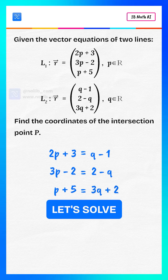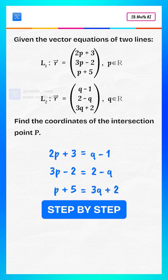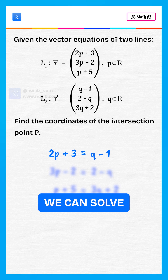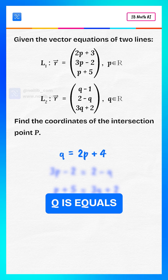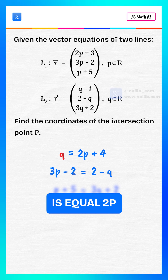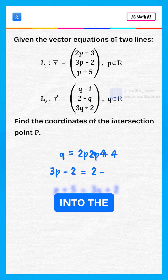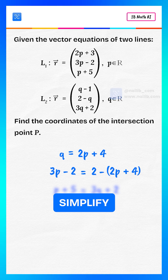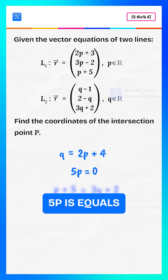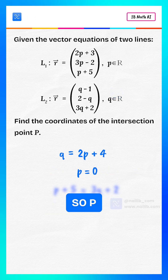The third component is P + 5 = 3Q + 2. Now let's solve these equations step by step. From the first equation, we can solve for Q: Q = 2P + 4. Next, substitute Q = 2P + 4 into the second equation. Simplify and we get 5P = 0, so P = 0.